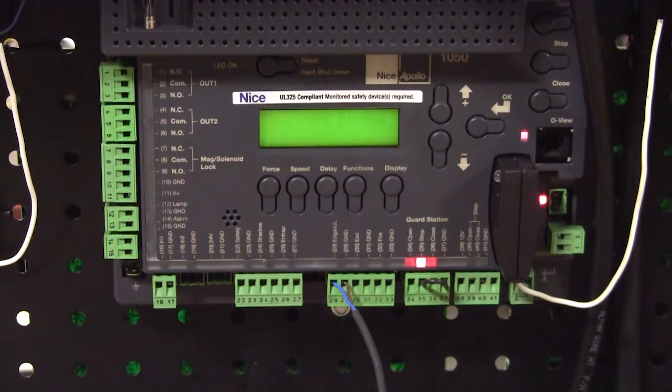It's going to scan the blue bus. It's looking for my one monitored entrapment device, at least one. In this case it's going to find the UL or find the 10k resistive edge.